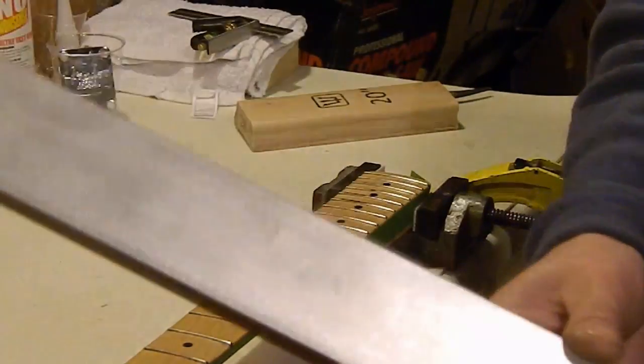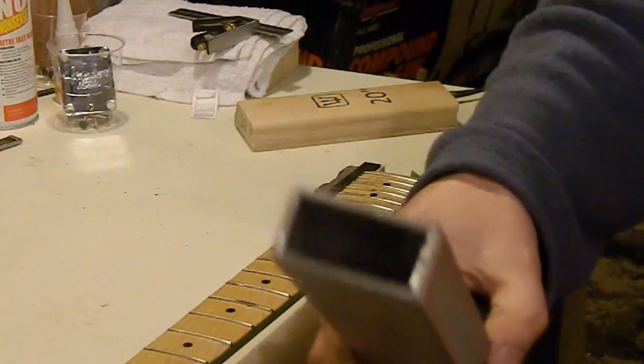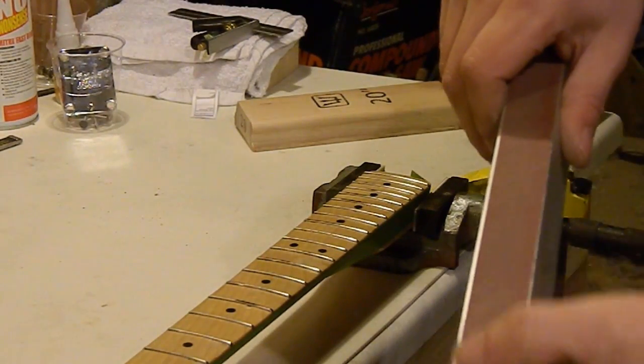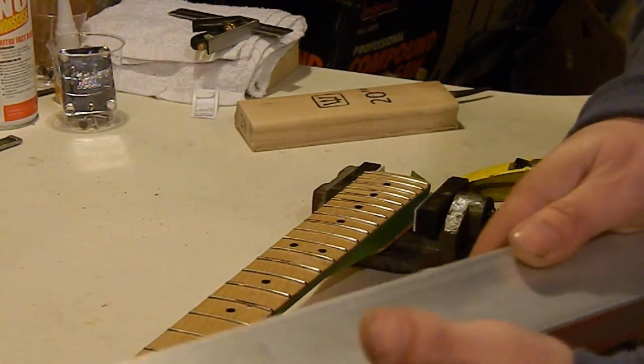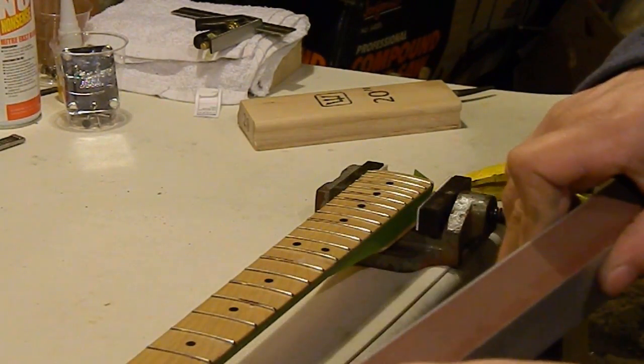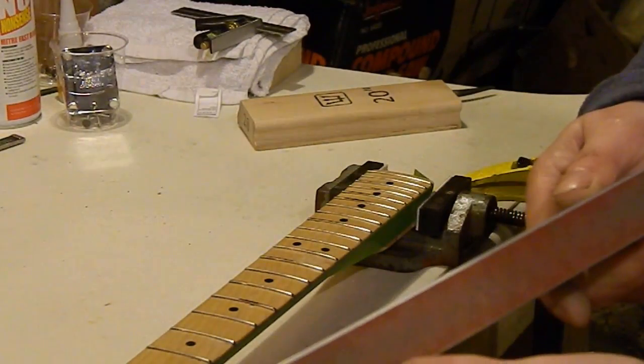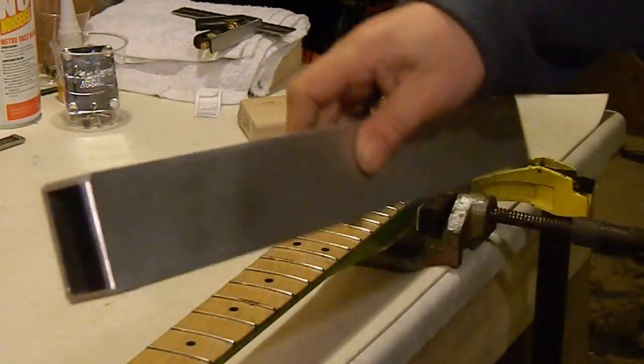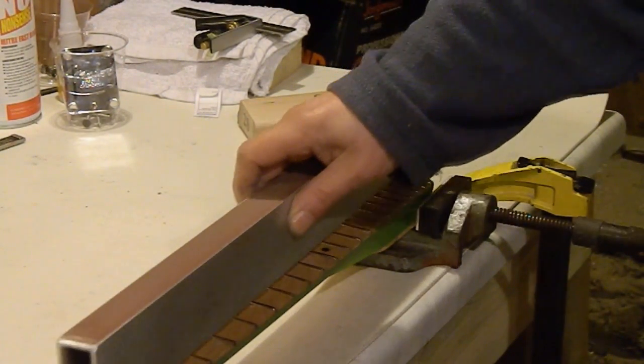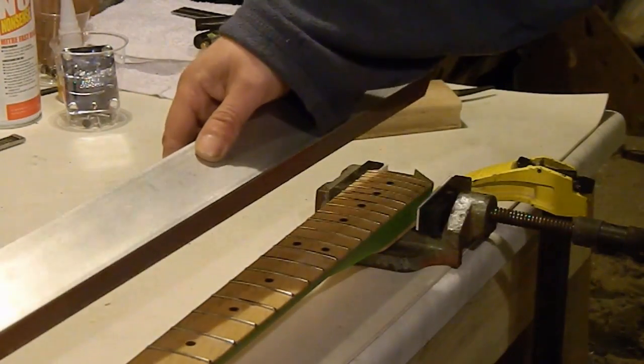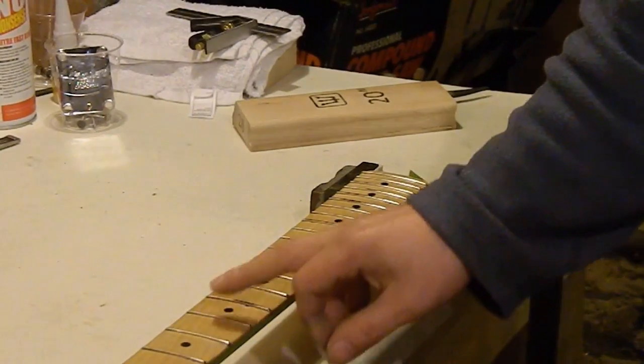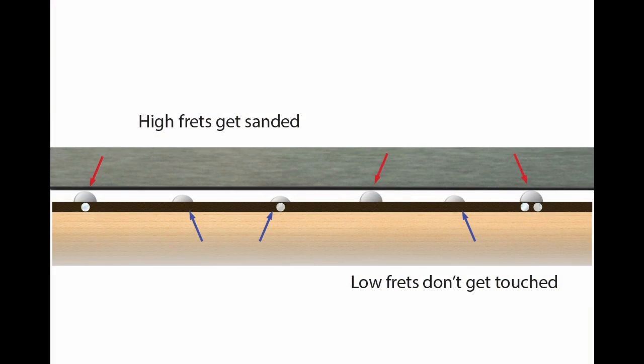This is a leveling beam - basically it's a piece of square aluminum with a ground flat side here that's dead level and dead flat. On here I've got a worn piece of 220 and a worn piece of 320 grit sandpaper. The theory is, as you move the block along the frets, it will level them all flat. Because the bottom of this is dead flat, all that we should touch is the high frets on the first few passes with the leveling beam.